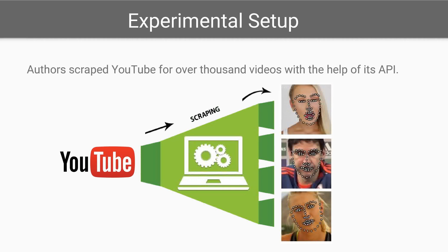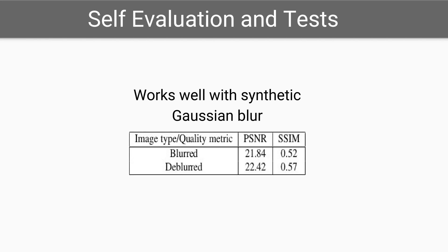The authors also introduced an automatic framework which can collect a large dataset from videos in a semi-supervised manner. For training, the authors scraped thousands of videos from YouTube. To evaluate the result of the proposed system, the authors used standard visual quality metrics of PSNR and SSIM for Gaussian blur. The images were synthetically blurred with Gaussian noise and reproduced to check the model.